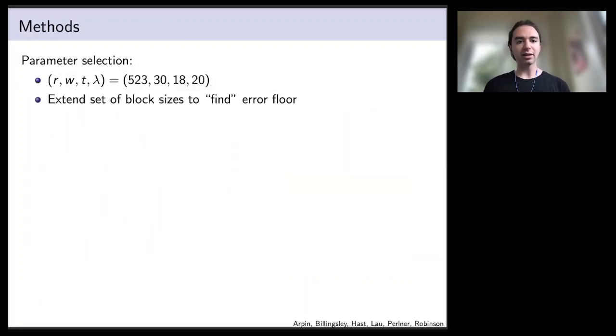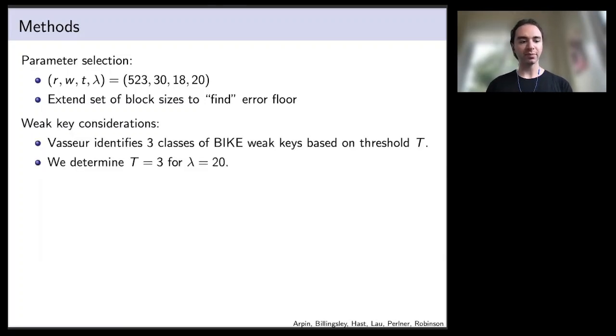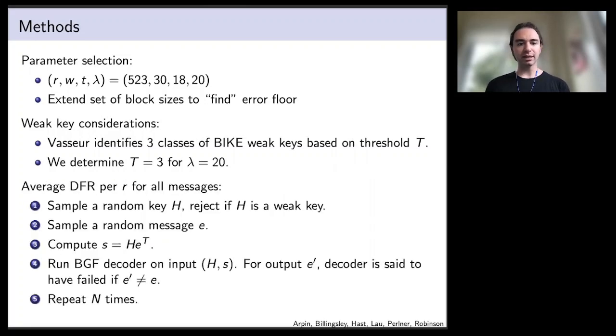The parameters that we started with are R equals 523, W, the row weight of the parity check matrix, is 30, the error weight is 18, and security parameter 20. Then we allow R to vary, extending the block sizes while leaving the other parameters fixed in order to find the error floor. There's also an issue of weak keys that we have to consider. Vasseur identifies three classes of weak keys for the BIKE cryptosystem based on a weak key threshold that we call capital T. For lambda equals 20, we determine experimentally that we have to set T equals 3. If you set higher, you see a radical increase in decoding failure rates being dominated by a weak key phenomenon.